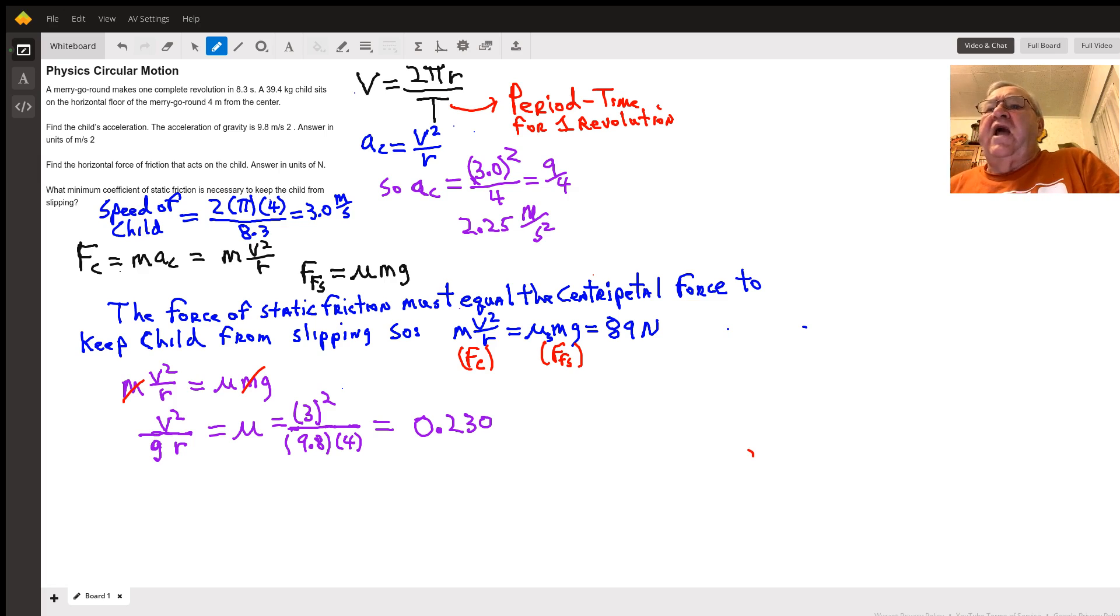If it's a constant speed, we can get that constant speed by taking the circumference of the circle, which is 2πr, and dividing it by the time it takes for one revolution, which we call the period.